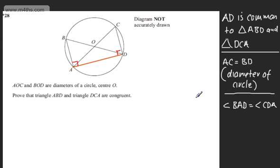I'm going to use the circle theorem: angles in a semicircle equal 90 degrees at the circumference.